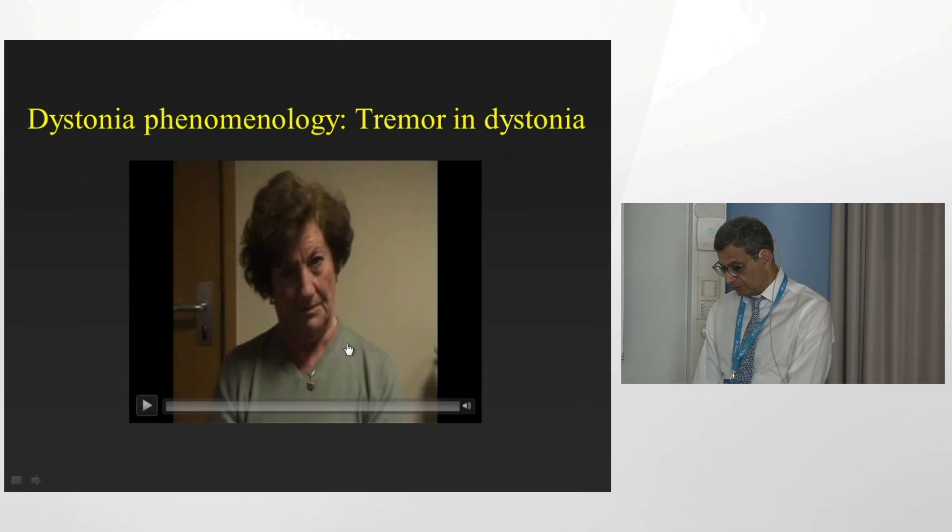To illustrate this, here is somebody who clearly has neck dystonia but also has tremor. The tremor is an integral part of the dystonia — this is not something different; we don't say this is essential tremor or something like that. This is part of the dystonia.